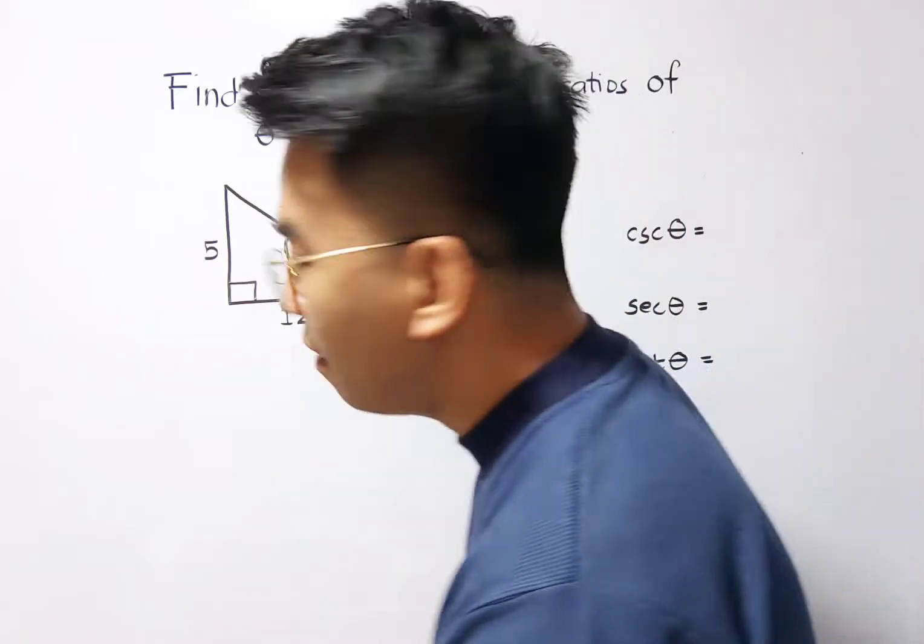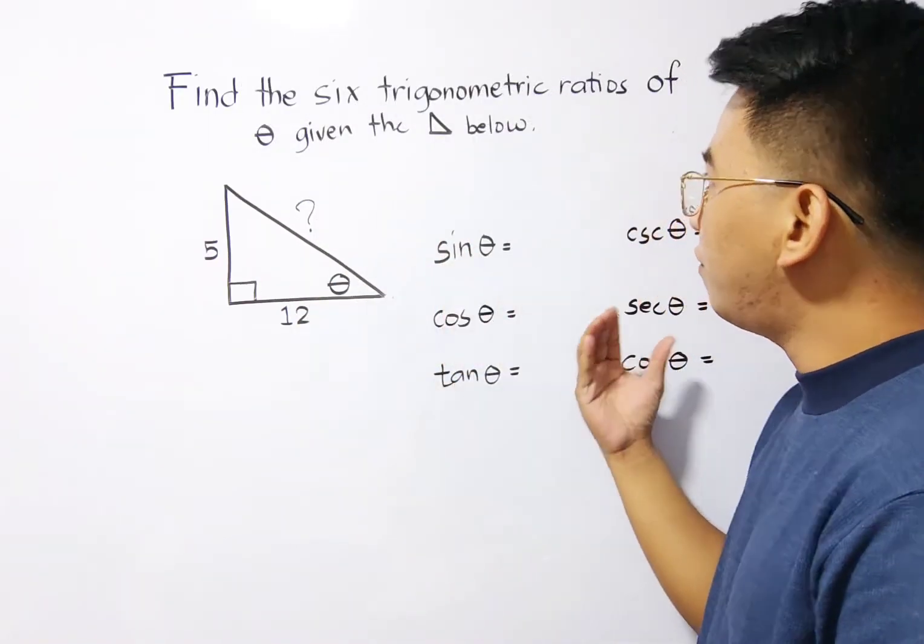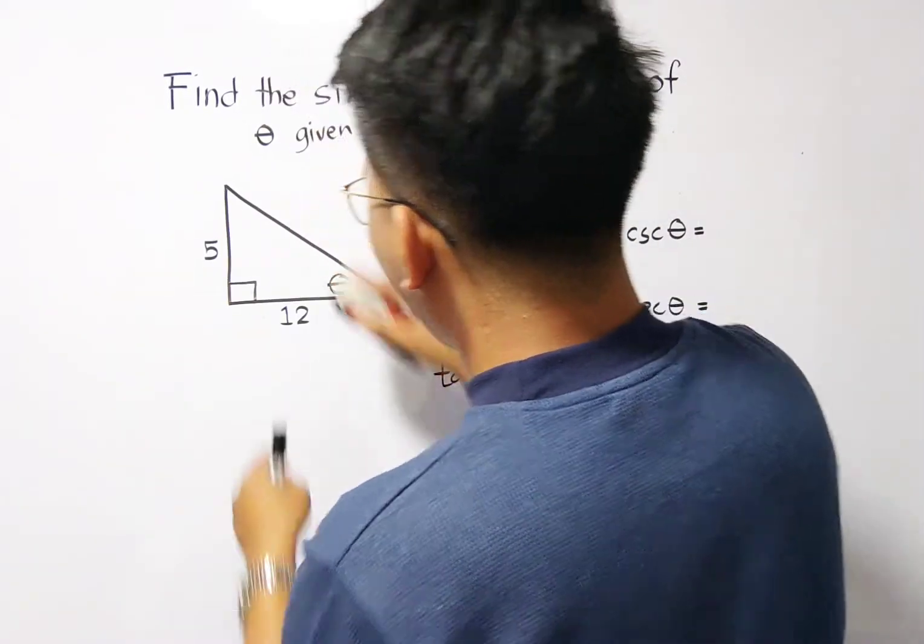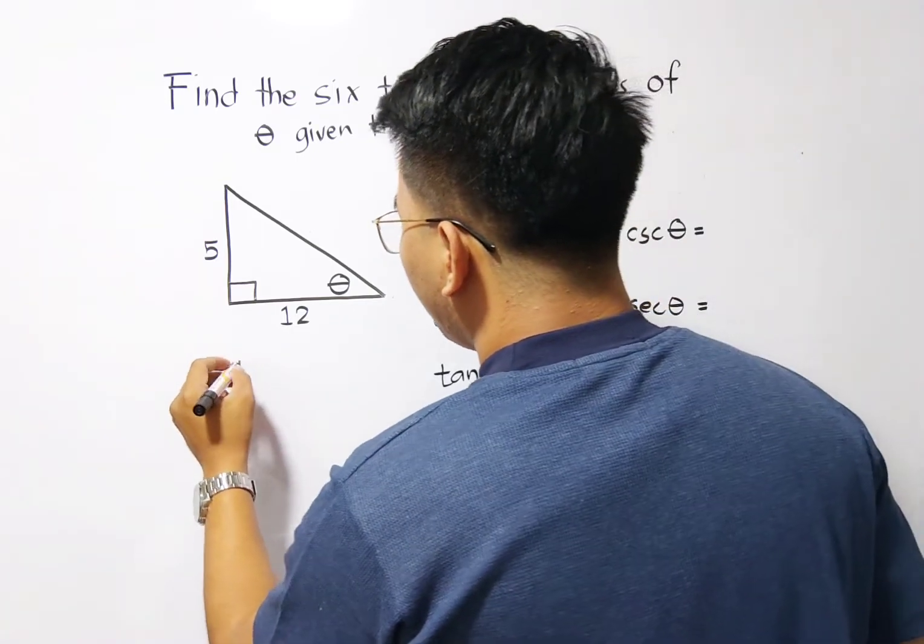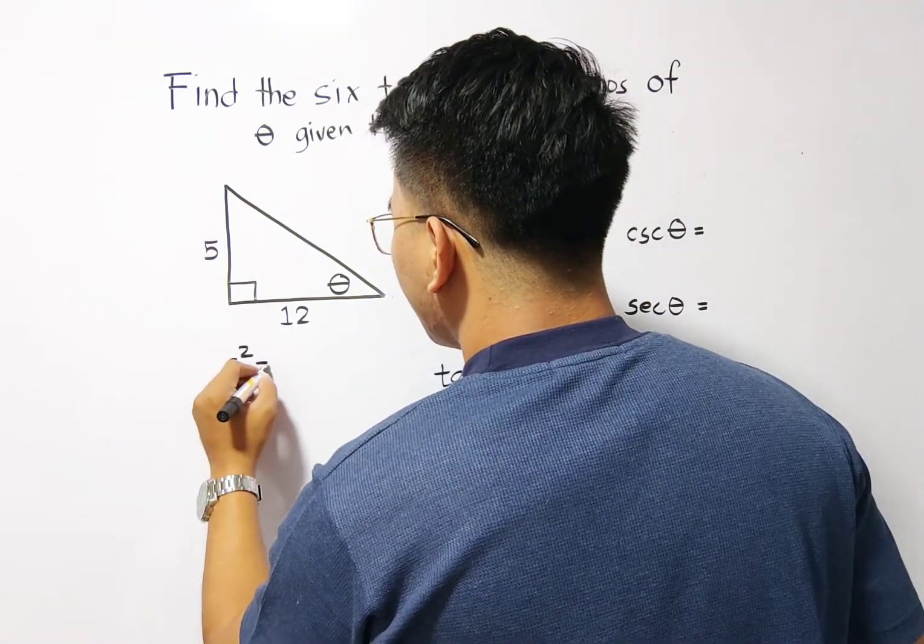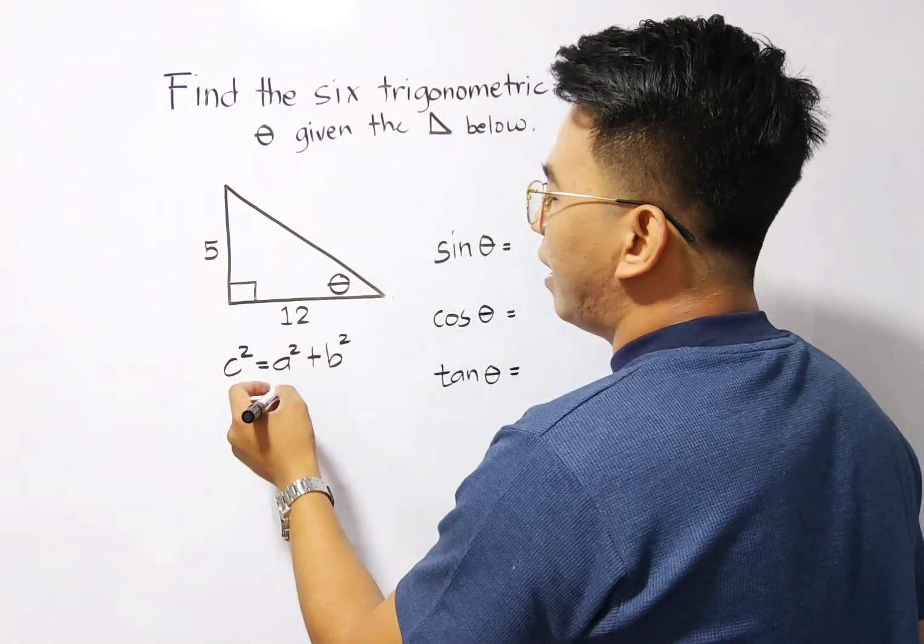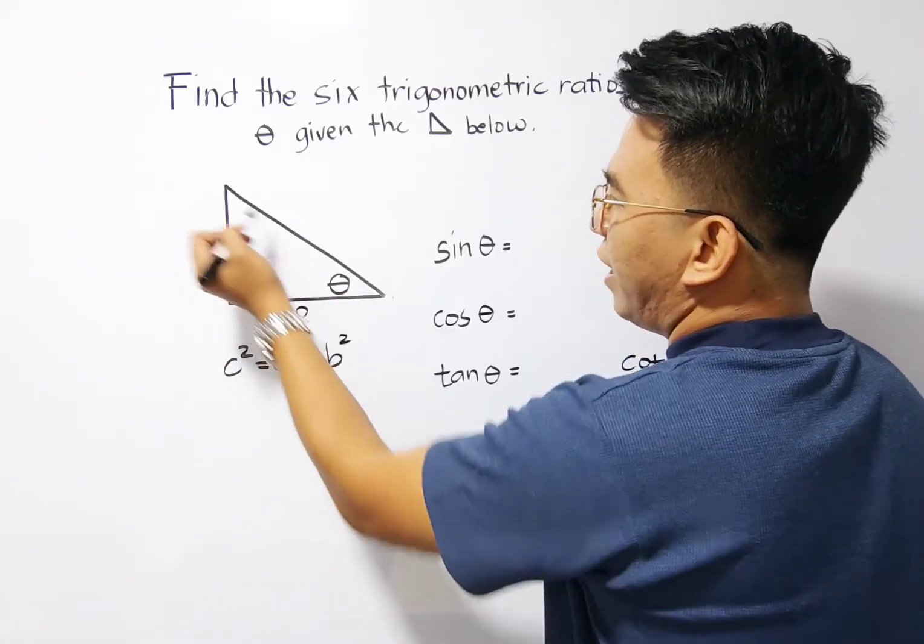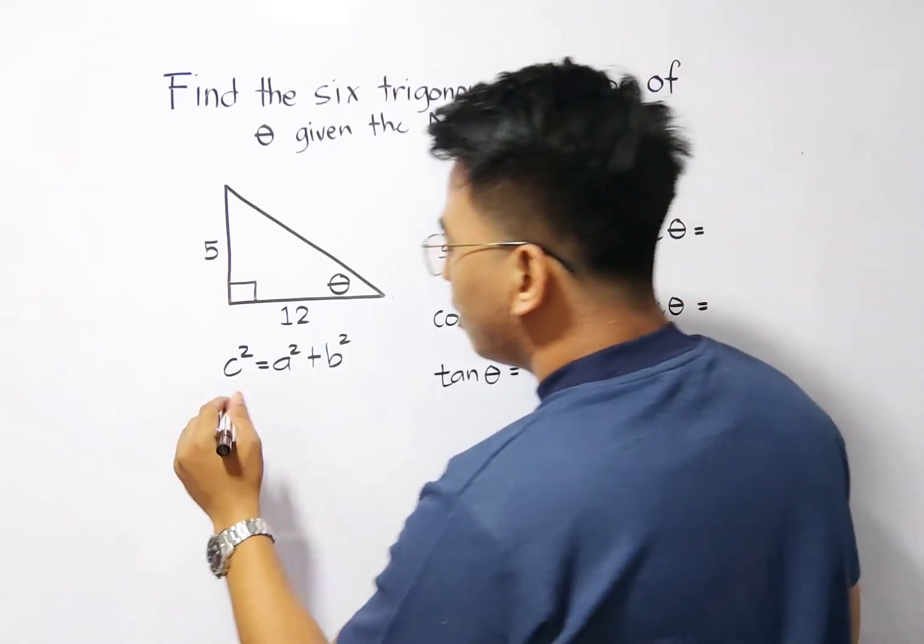So in this case, before we can solve or find the ratio of the six trigonometric ratios, we need to find first the length of your hypotenuse. Yes, you need to use the Pythagorean theorem: C squared is equal to A squared plus B squared. Because this is the formula that we need to use in finding the length of your hypotenuse. Here, the missing is C. We have C squared.